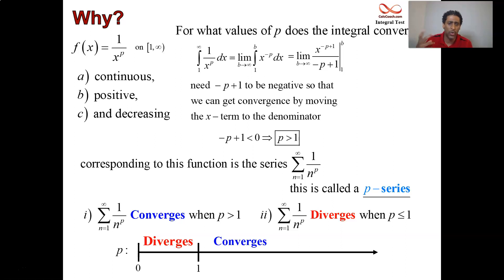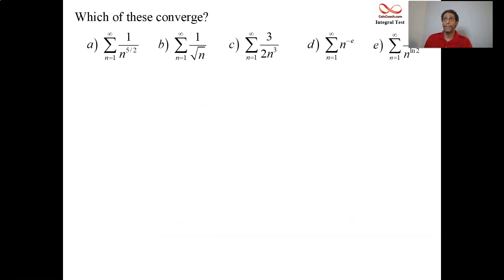This is going to be your favorite test because it's visual, it's quick. We can answer five questions in under two minutes. Letter a: 1 over n to the five halves. The value of p is a p-series, and the value of p is five halves. Five halves is greater than 1, so it converges.